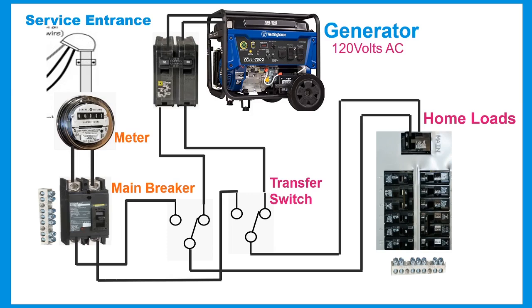An automatic transfer switch is mostly installed where a backup generator is located so that the generator may provide temporary power if there are power interruptions from the utility company. For example, if a backup generator is used to supply backup power when a public utility fails, the automatic transfer switch will tell the backup generator to start. Once the automatic transfer switch sees that the generator is ready to provide electric power, the ATS breaks the home connections to the electric utility and connects the generator to the home's main electrical power, supplying power to the home's electric load.